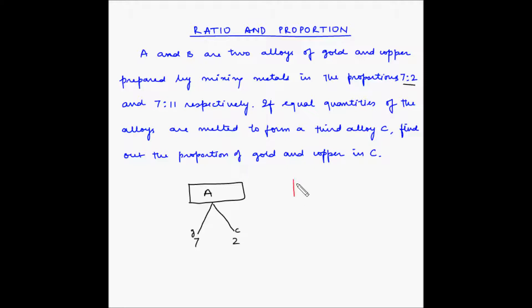There is another alloy B and B is also made up of gold and copper. In B, the ratio of gold and copper is 7 is to 11. This is 7 and this is 11.